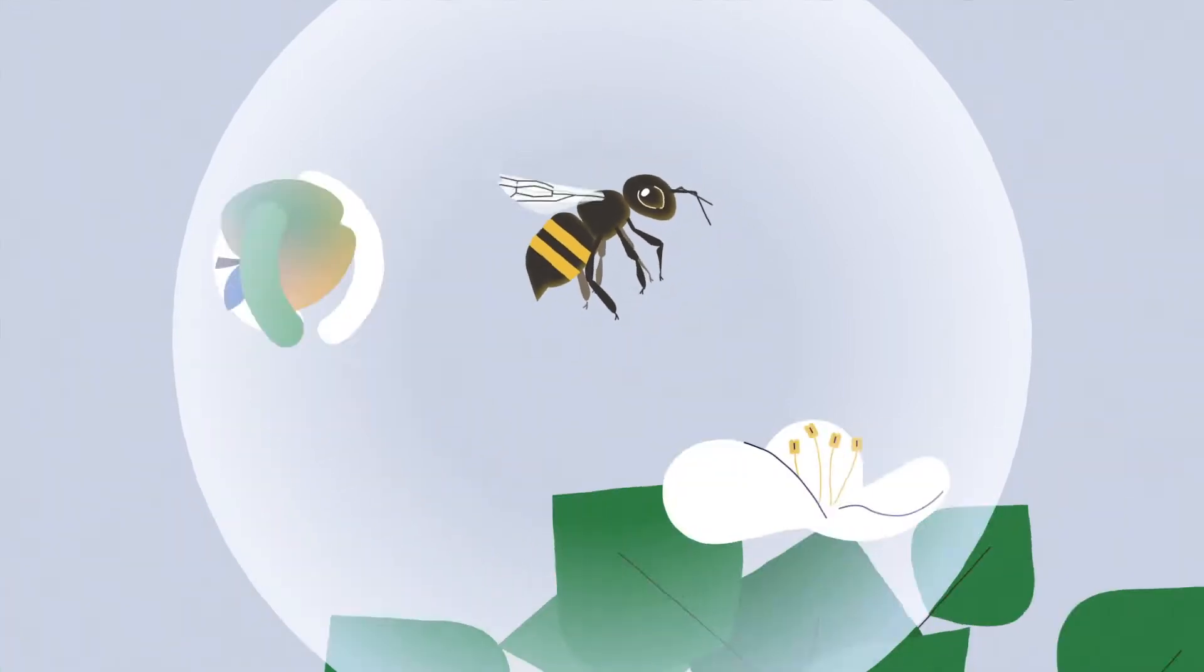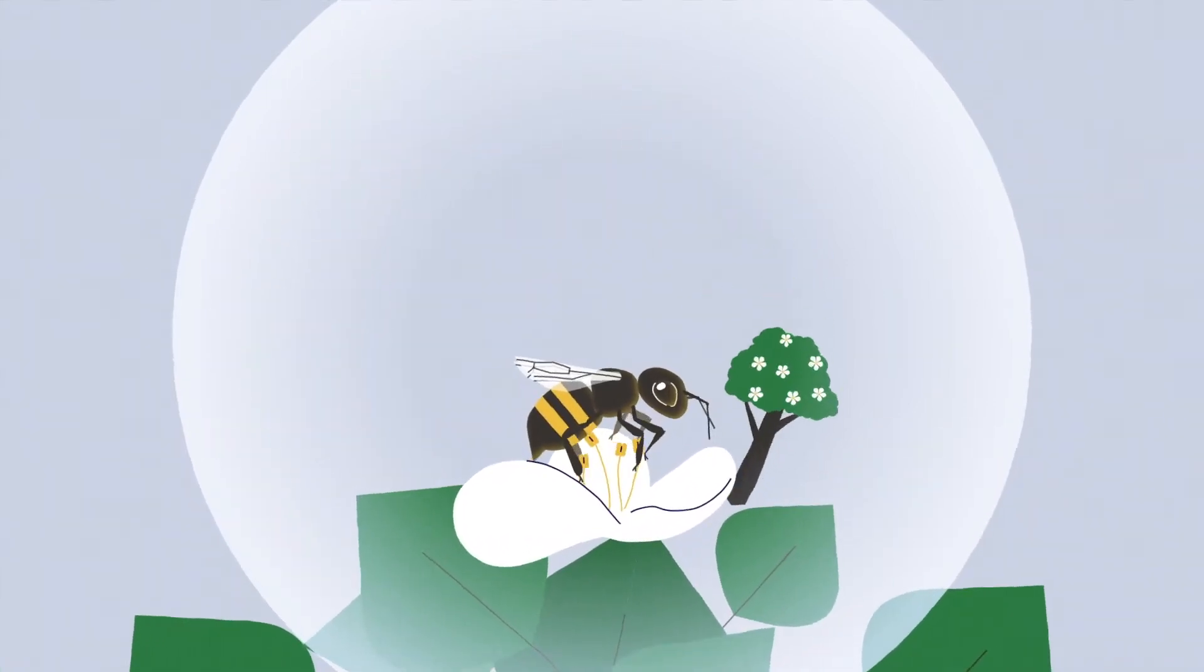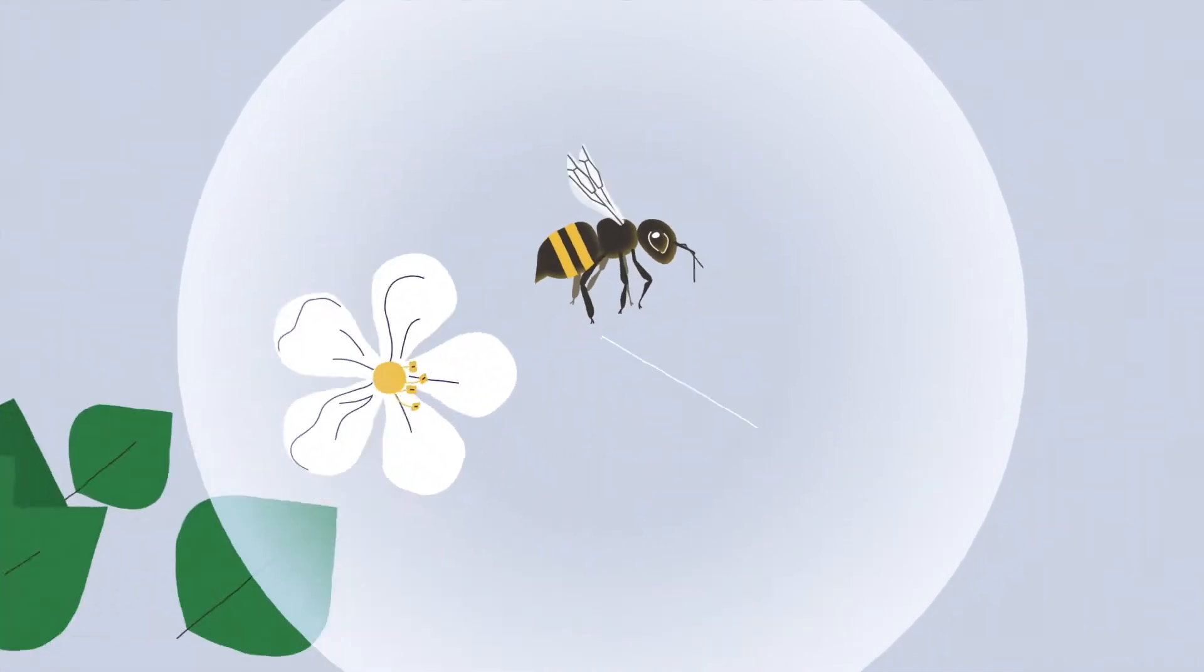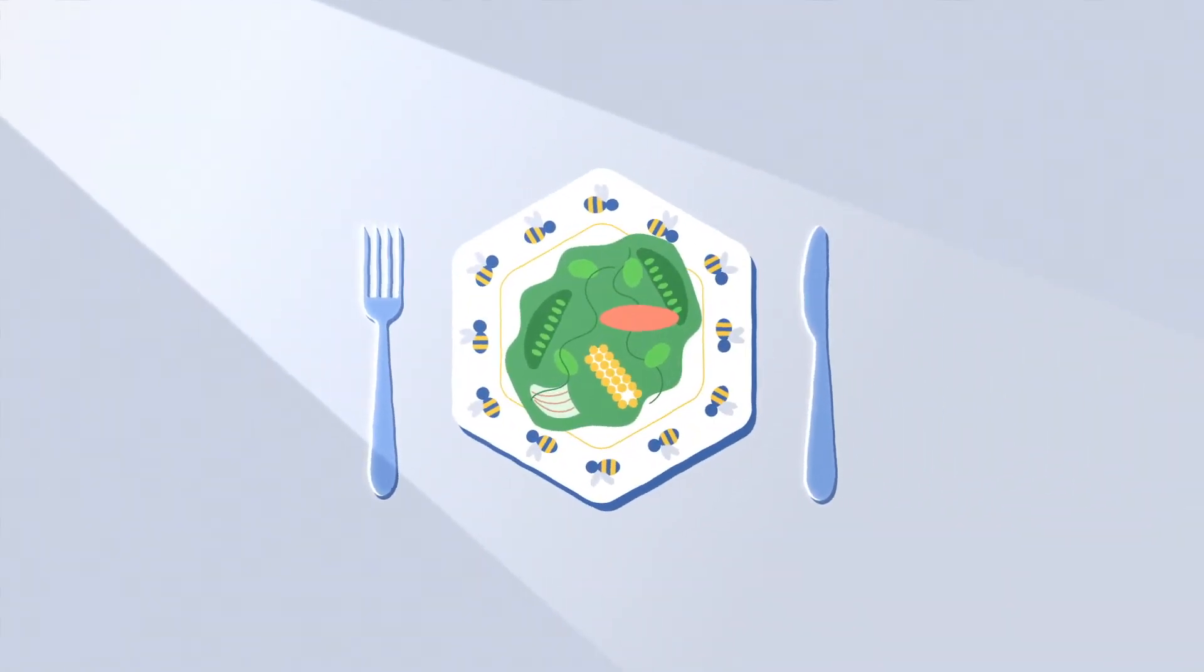the pollen on their bodies also fertilizes plants and keeps the cycle of life turning. As a result, the food that bees help to put on our plates extends far beyond honey.